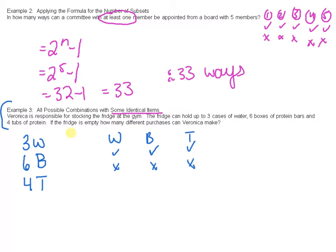So here's the difference with the water. We can either buy one, two, three, or zero. With the boxes of protein, we can go one, two, three, four, five, or zero, sorry, or six. And with the tubs of protein, we can either buy one, two, three, or four, or even the zero.